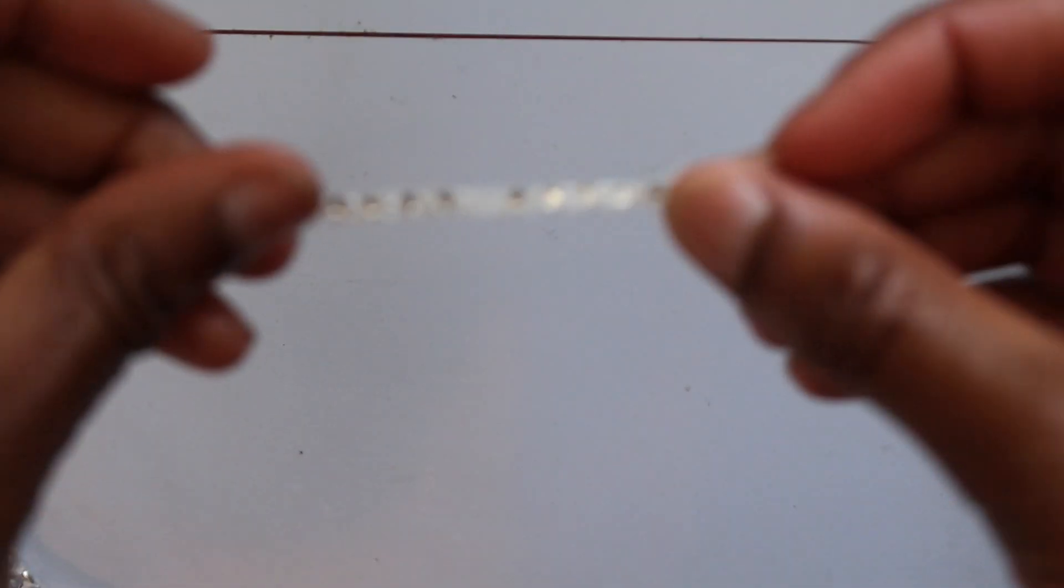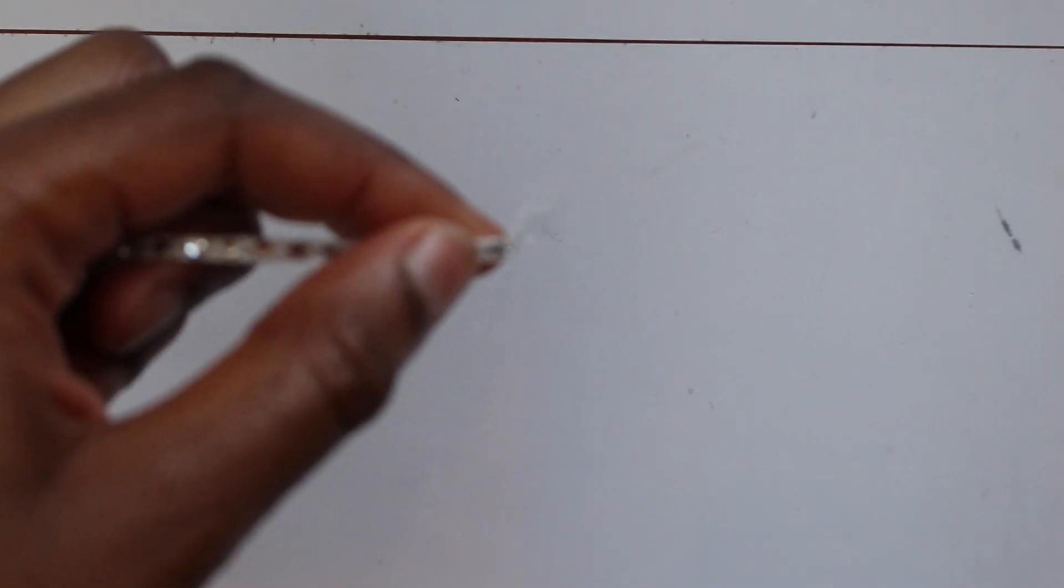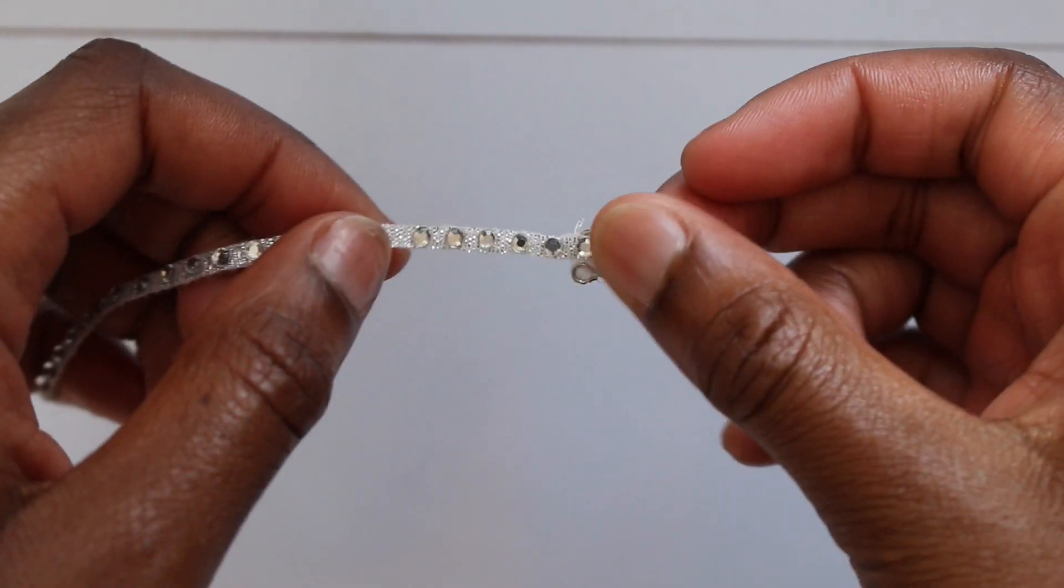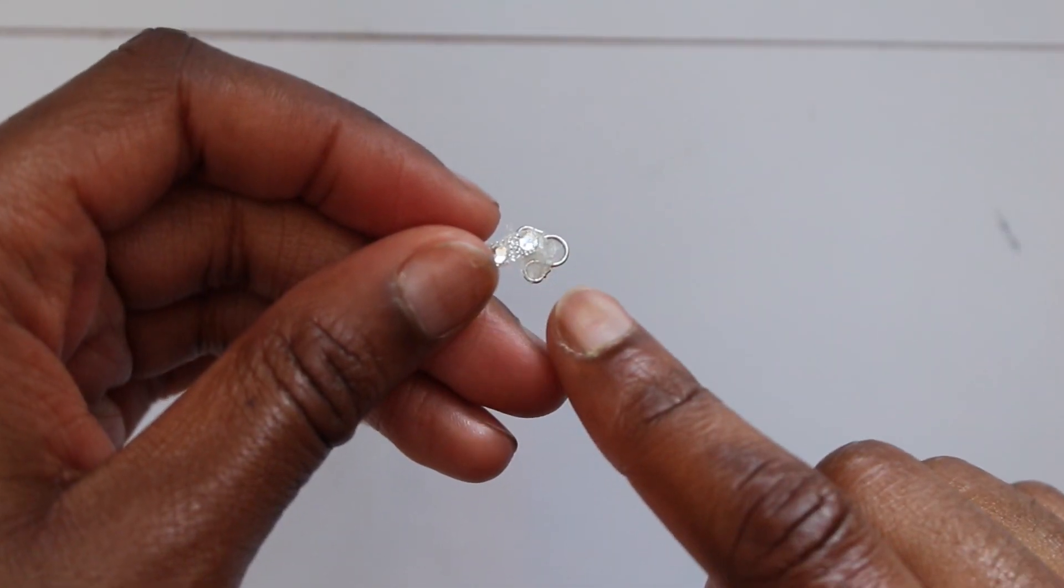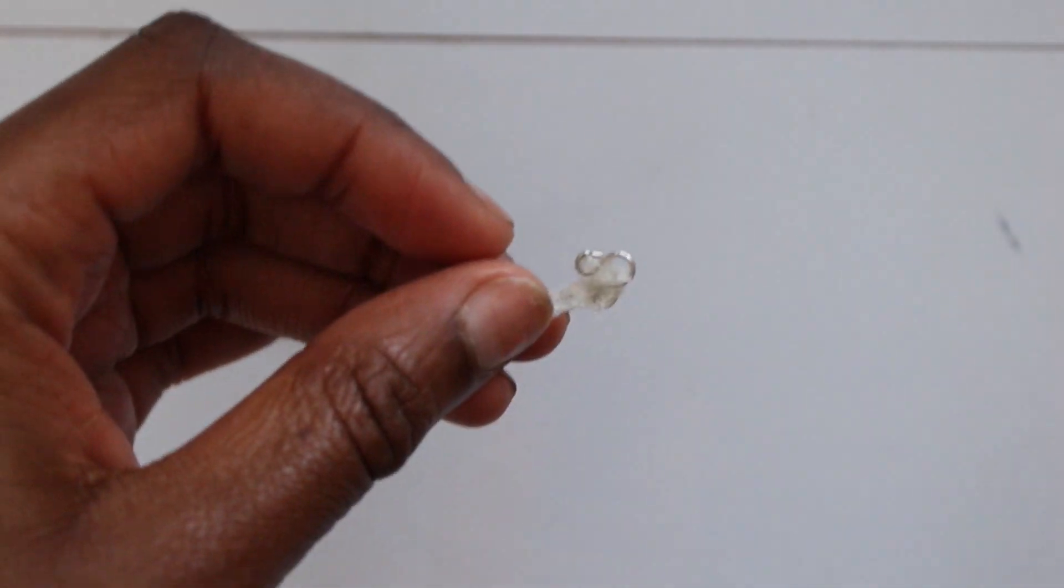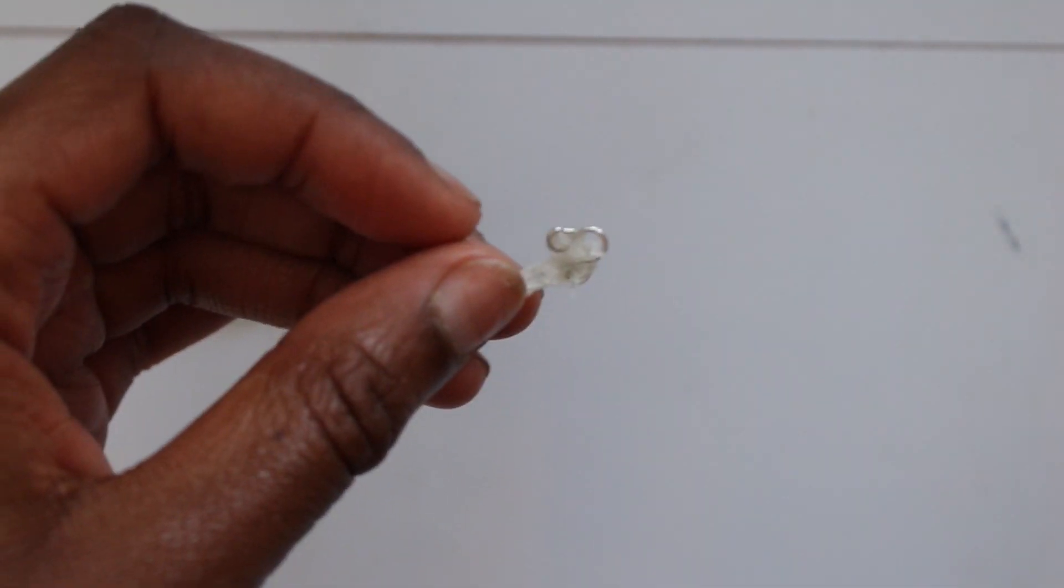To attach the clasp you just take it to either side of the waistband and glue it down. Pretty self explanatory, just make sure that you don't glue the actual part where the two sides meet.